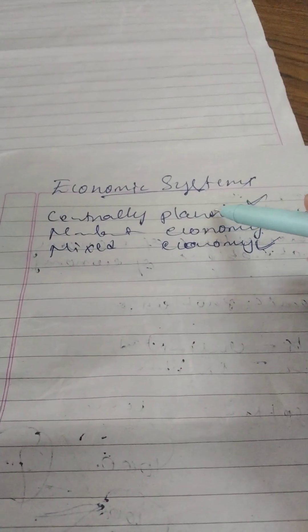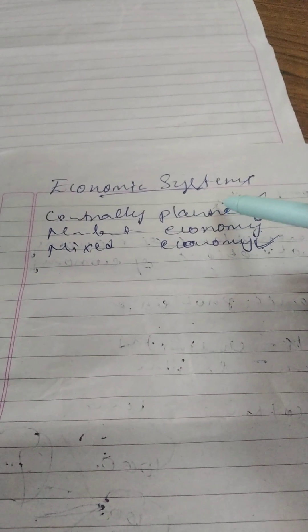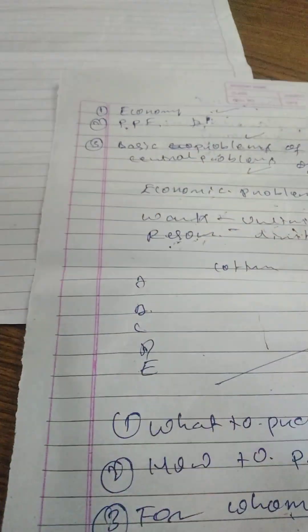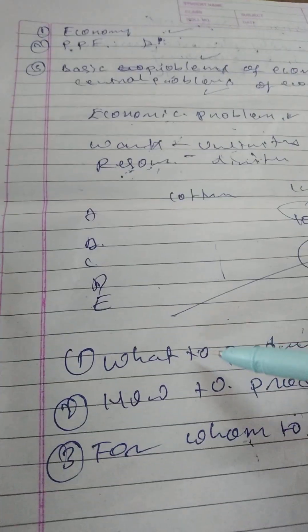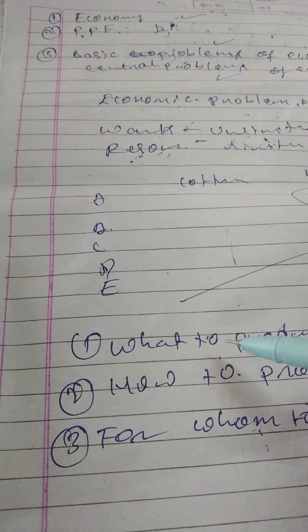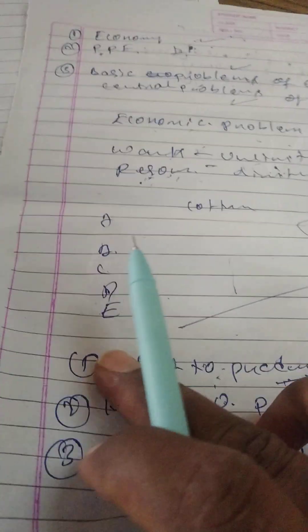In a central planned economy, the government has a major role. Every decision — what to produce, how to produce, and for whom to produce — is taken over by the government in a centrally planned economic system.